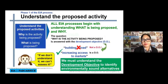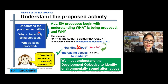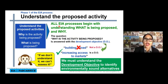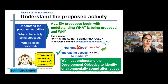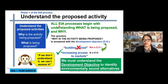Let's elaborate more on phase one: understanding the proposed activity. You have to understand the proposed activity — why is the activity being proposed and what is being proposed. All EAA processes begin with understanding what is being proposed and why. The question of why the activity is being proposed should be answered with a development objective. For example, you want to build a road and you have to do the EAA.